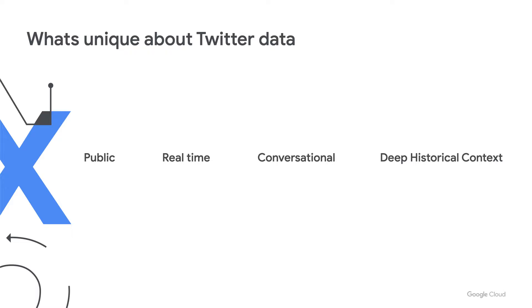With Twitter data, let's talk about what makes this such a unique platform. First, all tweets are public, which means we have vast information we can decode and understand key terms, trends, and insights from. Next, it's real-time and conversational — as users feel something, they're tweeting it using conversational language. And last, we have deep historical insight. Because Twitter data goes so far back, we could understand where trends actually change in terms of how people talk, and maybe things relevant in 2012 are no longer relevant today.